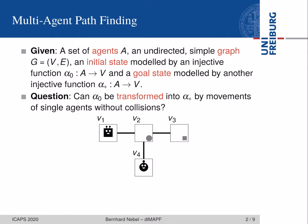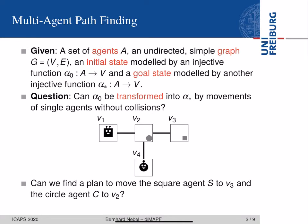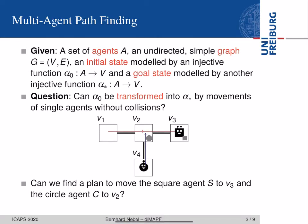Let's look at a small example. Can we find a plan to move this square agent to V3 and the circle agent to V2? We could start by moving the square agent to V2, then to V3, and afterwards move the circle agent to V2, and we are done. So yes, we can find such a plan.